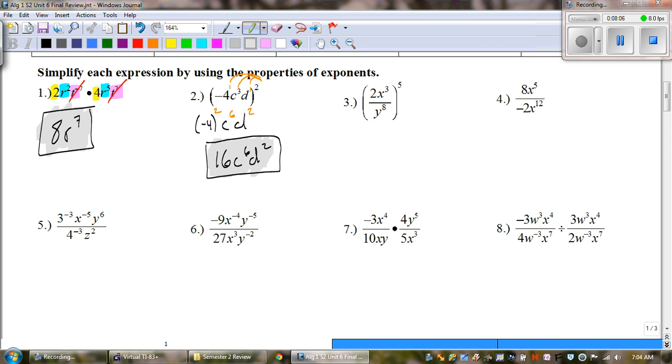Okay. And you should get 16c to the 6th d squared. Remember that negative 4 times negative 4 or negative 4 squared is positive 16.